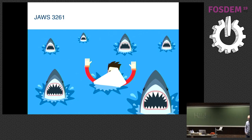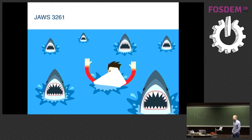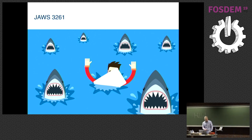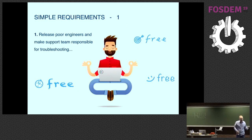This company didn't have much budget, but they asked us to help. Being lazy engineers, we first did research on what was available on the market and in open source. They had a simple requirement: release the poor engineers and make the support team responsible for troubleshooting. Just A number, B number, and time — that's it.